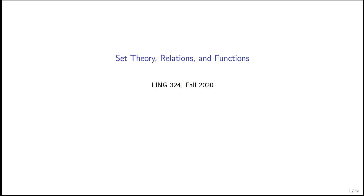We use mathematics to have a formal way to describe our word categories and things in the world. This week we're just focusing on set theory, and set theory is going to give us a way to talk about things like proper names. So if we have people in the world like Kate, Steve, and so on, we want to be able to represent those people. Set theory gives us a way to talk about objects and group them together.